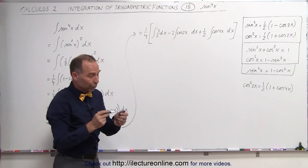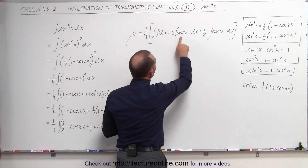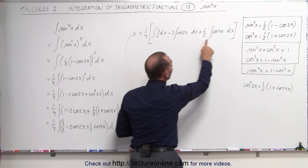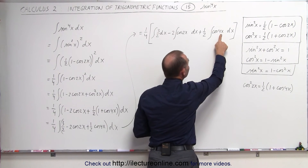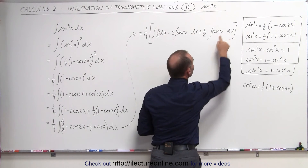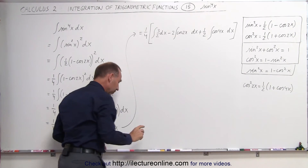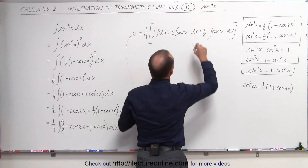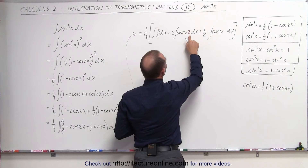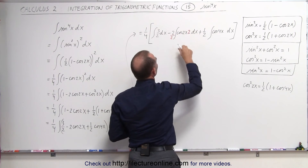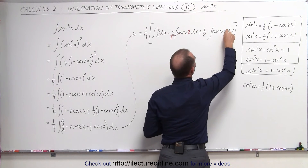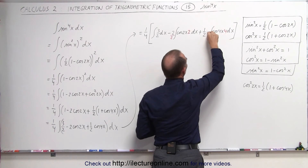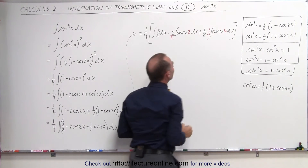The reason I left room is because if you want to integrate the cosine of 2x, you need a 2 dx here. And if you want to integrate the cosine of 4x, you need a 4 dx there. So we need to insert a 2 — and of course divide by 2 to compensate — and similarly multiply by 4 and divide by 4.